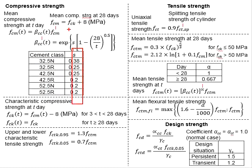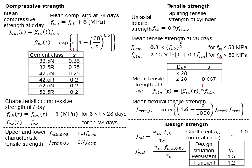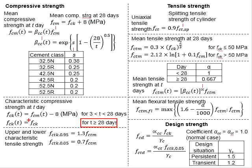Substituting the relevant values into the equations, you obtain the factor beta_CC, which is then multiplied with FCM to give the mean compressive strength at T-day. As for the characteristic compressive strength of concrete, when the concrete age is more than 28 days, FCK_T will be equal to FCK, which is the characteristic compressive strength of the concrete.